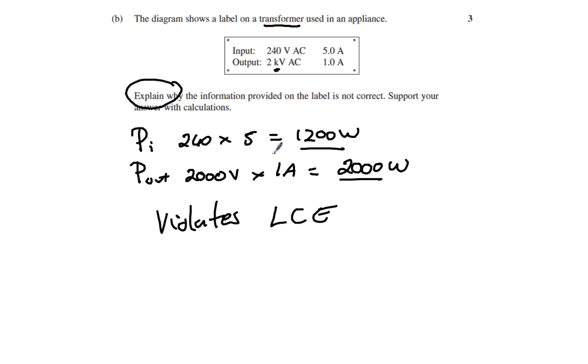To get full marks, you need an explanation: the results are inconsistent with the concept and violate conservation of energy. I've done the explanation part and supported it with the mathematics. That's all you need to write to get the full three marks.